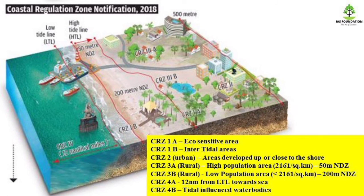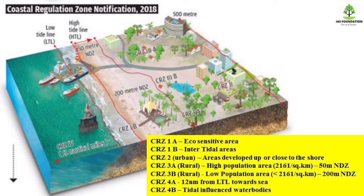Now CRZ2 is the Urban area — you will see changes in this area; those areas are developed up to or close to the shore. CRZ3 is the rural area — there are 2 notifications here: 3A and 3B. 3A is a high population area — in the rural area, there is a population of 1 per km. 3B is the low population area — 1 square kilometer is less than 2,160 persons per square meter.